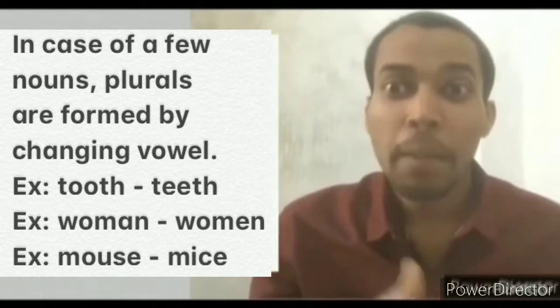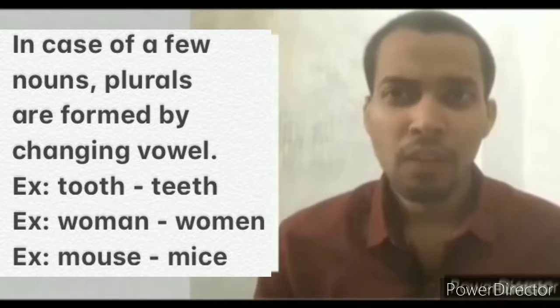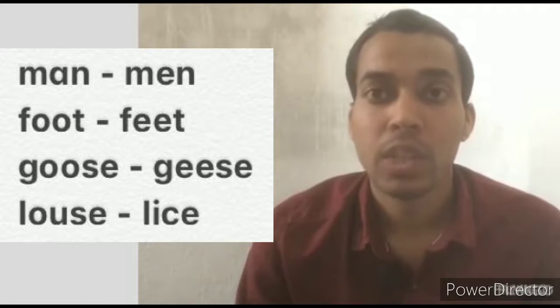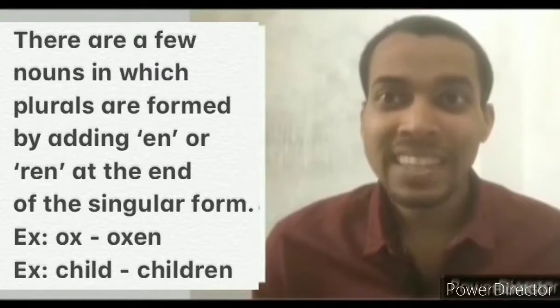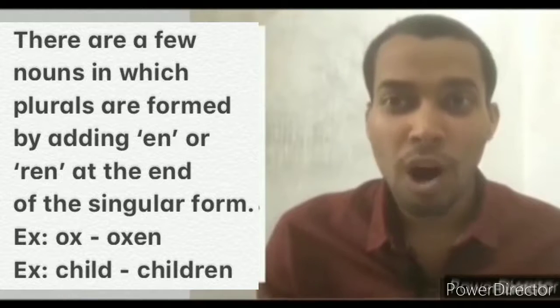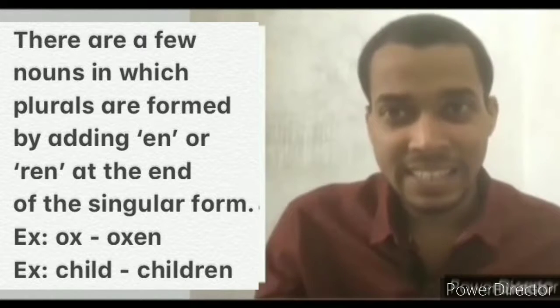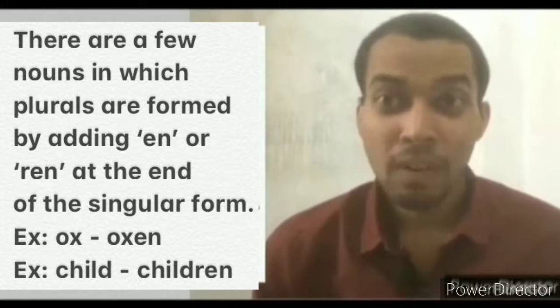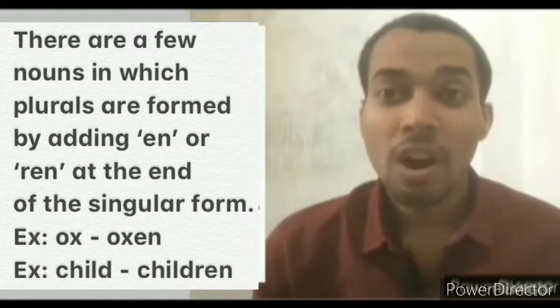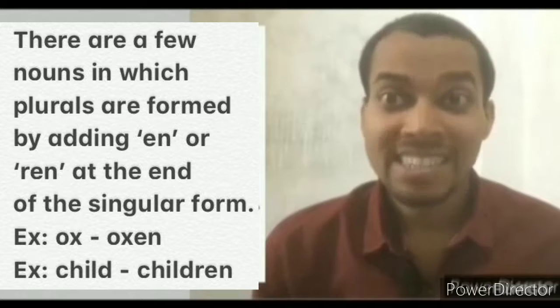In case of a few nouns, plurals are formed by changing vowels. For example, tooth - teeth, woman - women, mouse - mice, man - men, foot - feet, goose - geese, louse - lice. There are a few nouns in which plurals are formed by adding EN or REN at the end of the singular form. For example, ox - oxen, child - children.